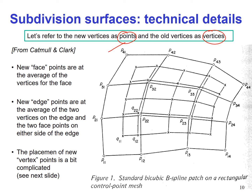New face points are placed at the average of the 4 vertices of the face. The new edge points are at the average of the two vertices on the edge and the two face points on either side of the edge — so it's not just the average of the vertices but also incorporates the adjacent faces. For example, considering a given edge, we take the average of its two endpoint vertices as well as the two adjacent face points, giving a point that is not exactly at the midpoint of those two vertices. The placement of new vertex points is more complicated, as we'll see on the next slide.